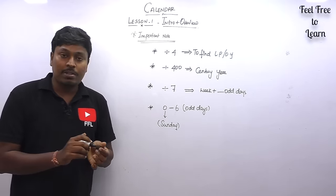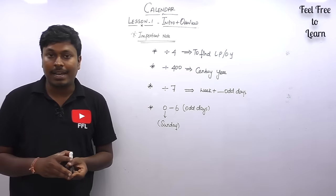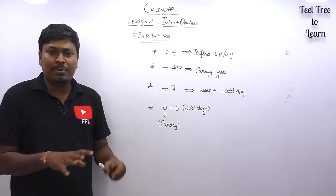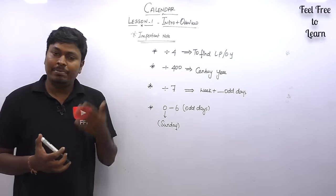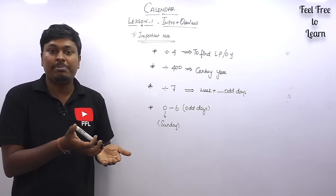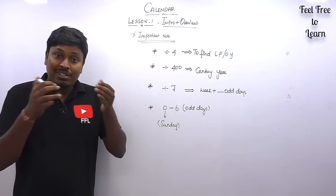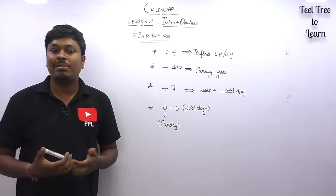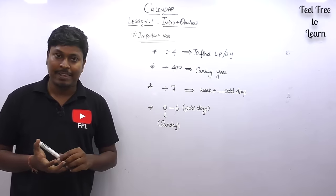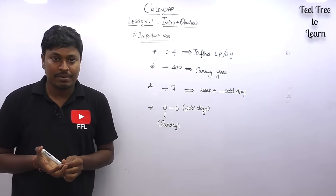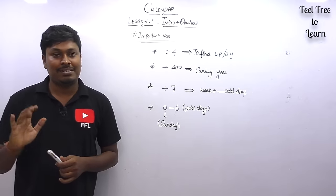Don't forget to watch the remaining videos. Only if you practice more can you crack calendar questions — just watching is not enough. Try picking random years like 1943 and check if they are leap or ordinary, then find how many odd days that year has, then check how many odd days are in January. Practice more and the calendar topic will become very easy. Thank you so much for watching — if you liked it, share with your friends. Bye!